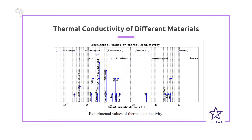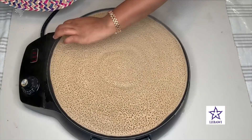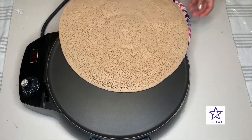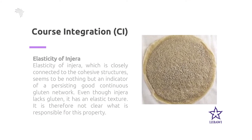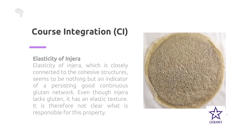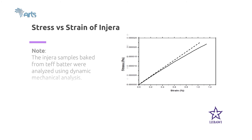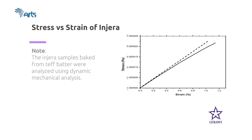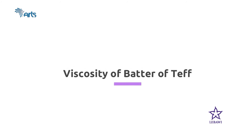Now let's integrate these properties of bulk matter with injera. The first is elasticity of injera. Injera has elasticity but is gluten-free. Studies show that certain elasticity in foods is dependent on gluten, but there is no research explaining the elasticity of injera despite having no gluten. Research shows there is a stress-to-strain relationship in injera samples backed from teff batter, analyzed using dynamic mechanical analysis, from which we can find the ratio of stress to strain to determine the stiffness of injera.